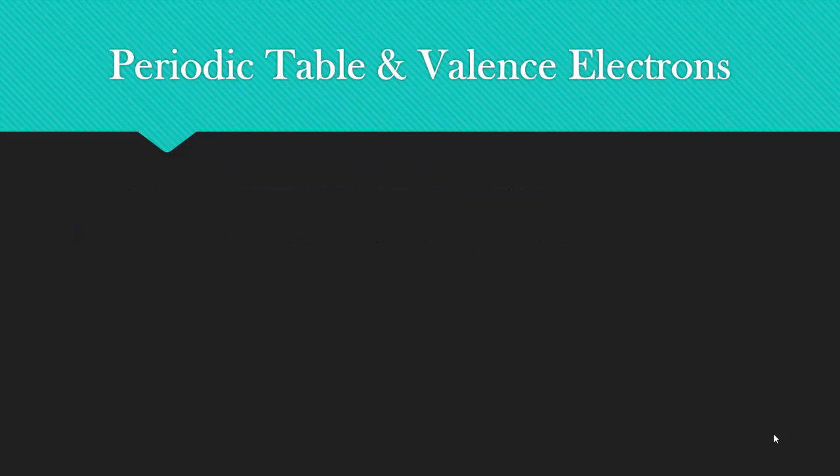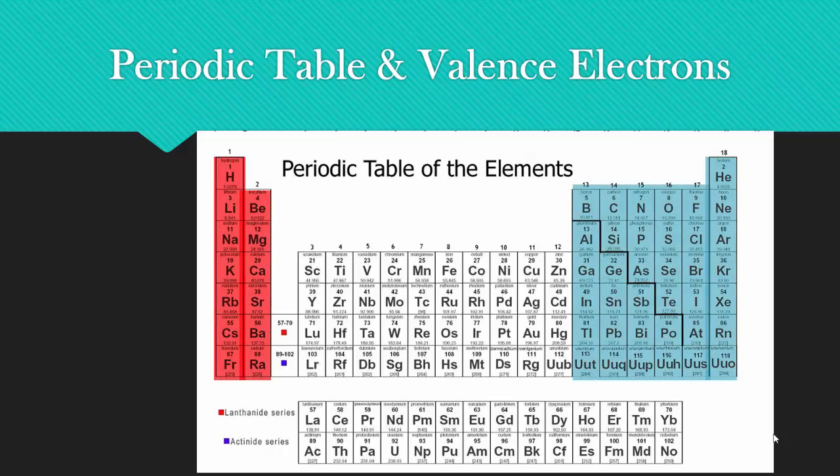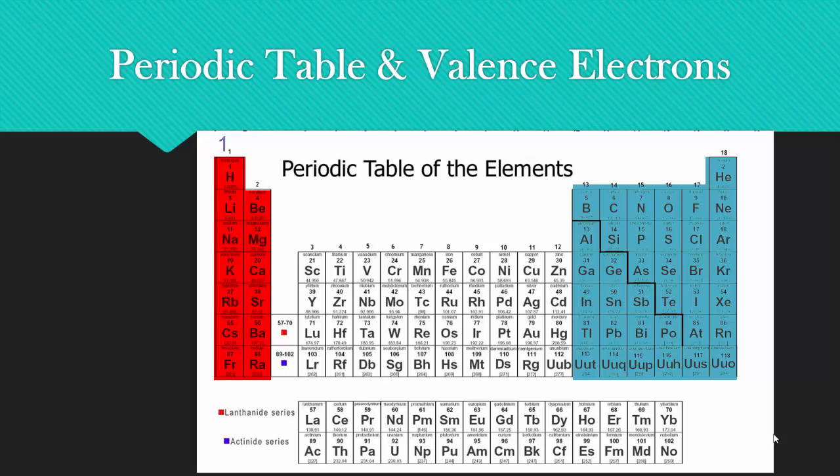The periodic table for the representative elements can help you figure out how many valence electrons you have. You look at the representative elements, which are highlighted in either red or blue, and everything in the first representative column has one valence electron. Everything in the second has two. The third column has three. The fourth has four. Fifth column has five valence electrons. The sixth column has six valence electrons. The seventh has seven valence electrons. All of the elements in the eighth column have noble gas configuration, which means they all have eight valence electrons, except for helium, which has two.